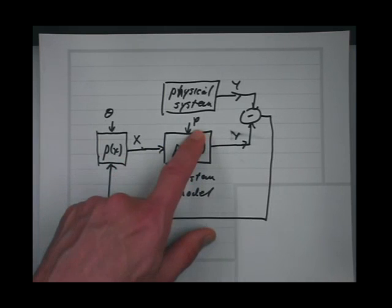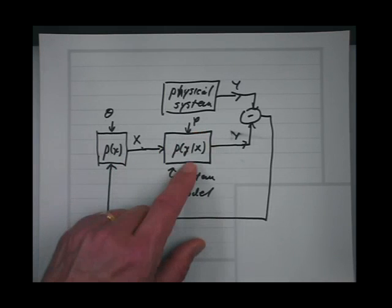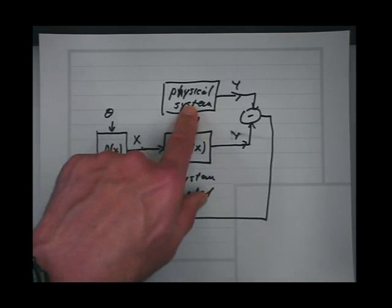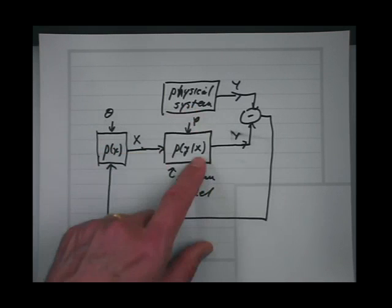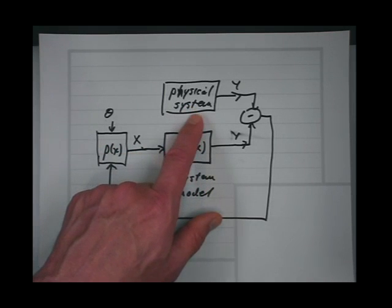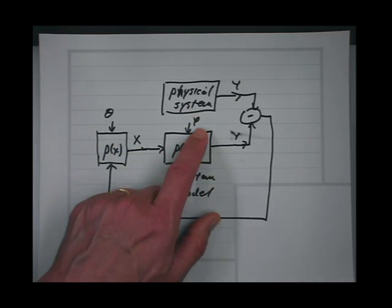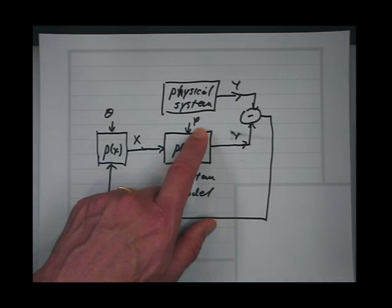For instance, this could be the focus parameters if this is a microscope. The microscope might be a little bit out of focus, so this parameter tells us how out of focus the microscope is. Or this parameter can describe how smooth this distribution is, because we might have a family of distributions.